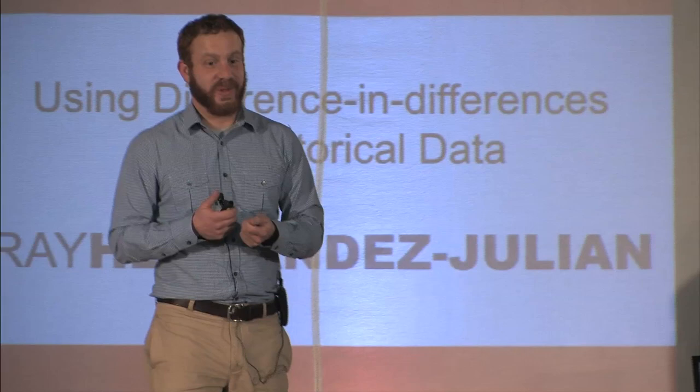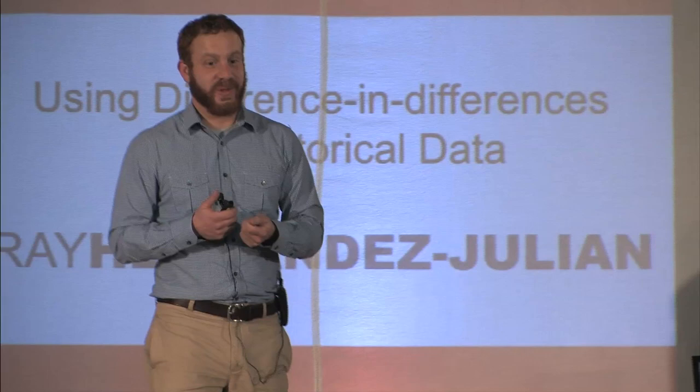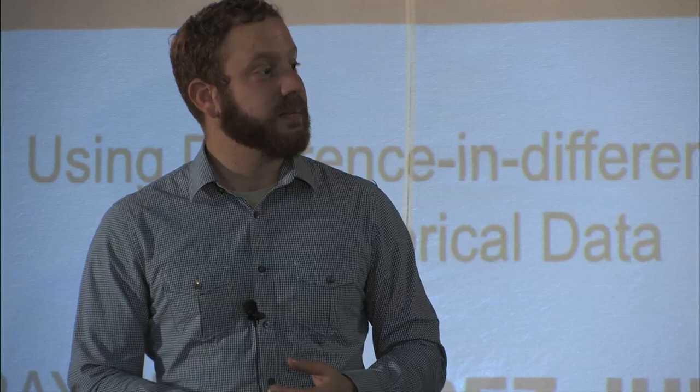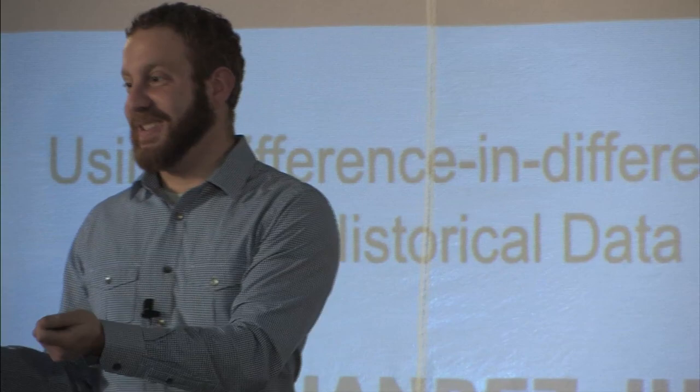My point is we can use difference in differences in the social sciences to replicate the scientific method that students are more used to seeing in the natural sciences. They can still infer causality about things like the relationship between recessions and population growth, or class size and student learning — for that question you would randomly assign different teachers to different class sizes and look at test scores over time.